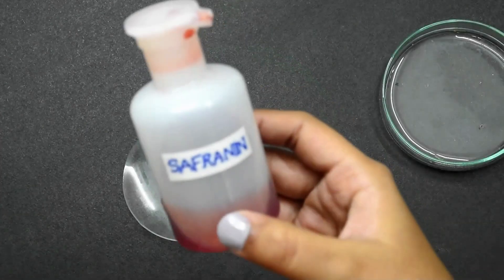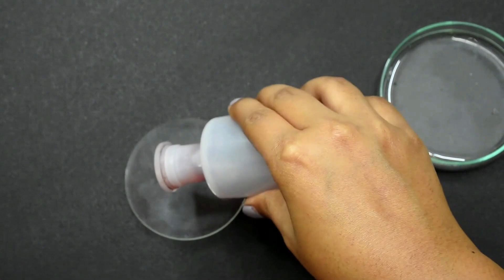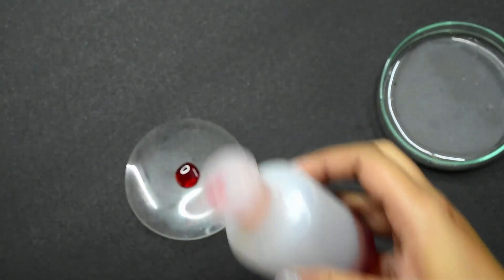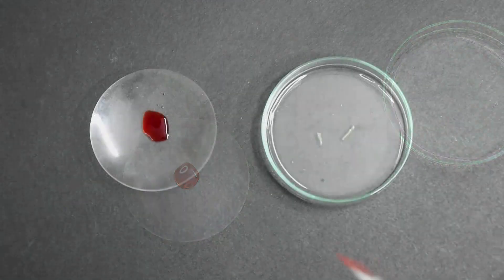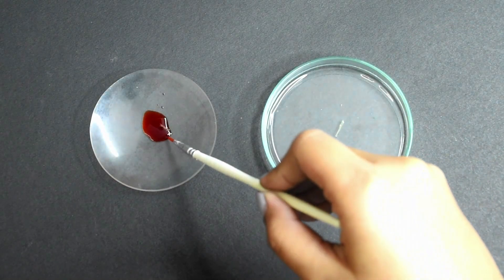Next, we take a staining reagent like saffronin and take a few drops of it on a watch glass. With the help of a brush, we take the thin epidermal layer from the water and transfer it to the saffronin solution.